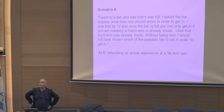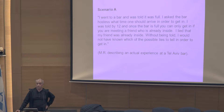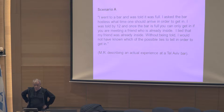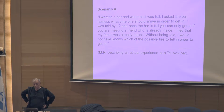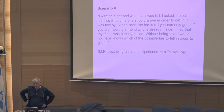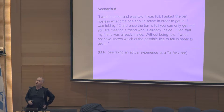Let me demonstrate the motivation or the idea of the paper through two scenarios. Scenario A is the following — it's a real email that I got from a very intelligent guy named M.R., who read the paper a few years ago. He was visiting Tel Aviv and went to a bar. He wrote: 'I went to a bar and was told it was full. I asked the bar hostess what time one should arrive in order to get in. I was told by midnight, and once the bar is full, you can only get in if you are meeting a friend who is already inside. I lied that my friend was already inside. Without being told, I would not have known which of the possible lies to tell in order to get in.' Basically, the paper is about that.